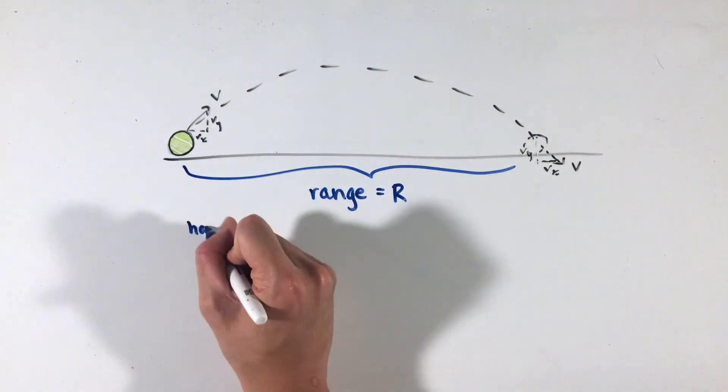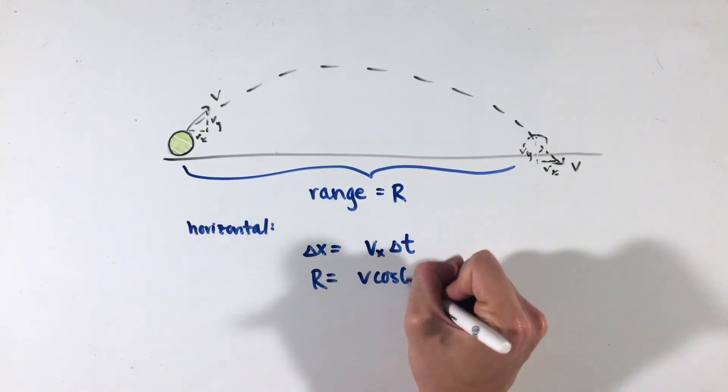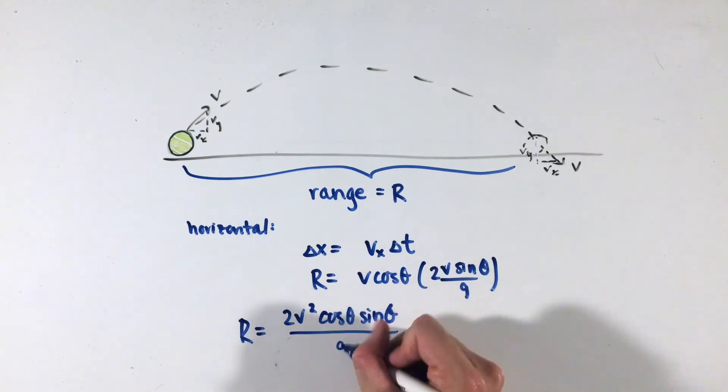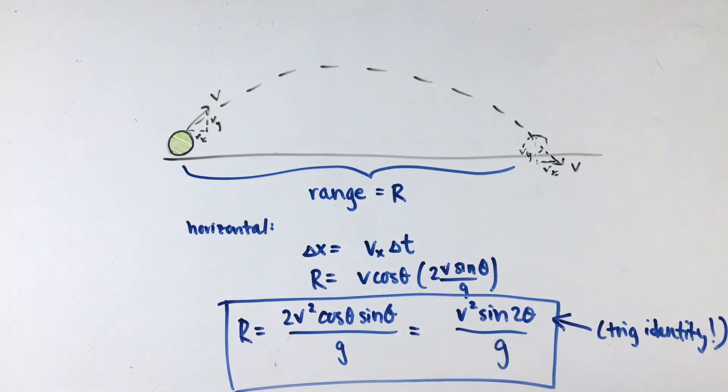Using this time, we can easily find how far the object travels, or what's known as the range equation. Remembering that horizontally this object moves at a constant velocity v sub x for this quantity of time, the total horizontal distance, or range, is not hard to find either.